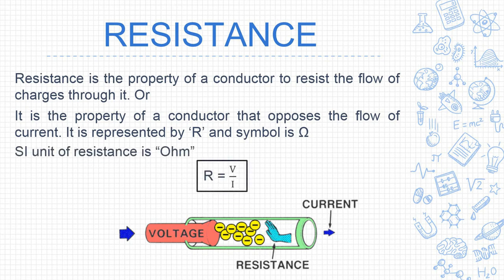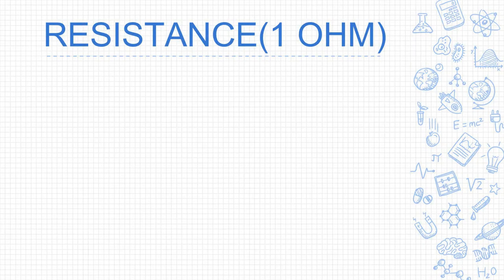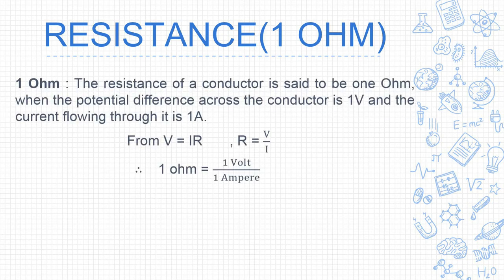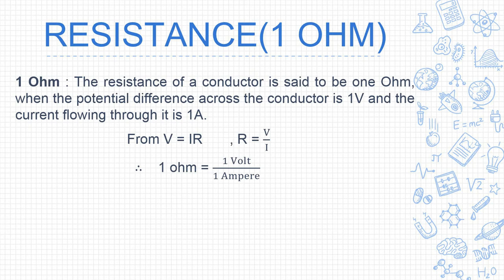The SI unit of resistance is ohm. From Ohm's law, V = IR, we can derive the formula for resistance: R is equal to V upon I. The resistance of a conductor is said to be 1 ohm when the potential difference across the conductor is 1 volt and the current flowing through it is 1 ampere.